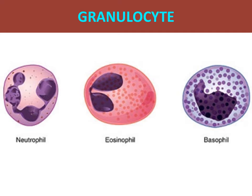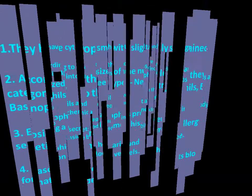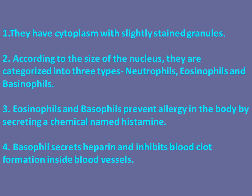Granulocytes are divided into three types: neutrophils, eosinophils, and basophils. They have cytoplasm with slightly stained granules and are categorized according to the size of the nucleus. Eosinophils and basophils prevent allergy in the body by secreting a chemical named histamine. Basophils secrete heparin and inhibit blood clot formation inside blood vessels.